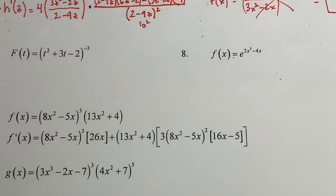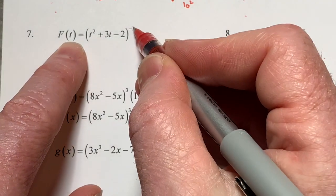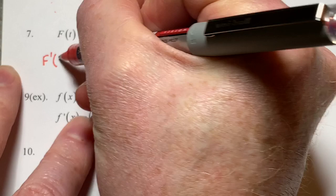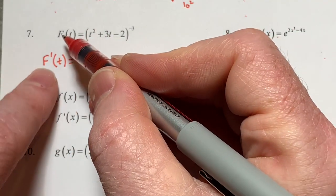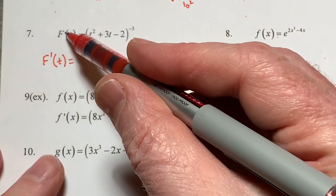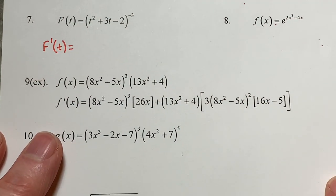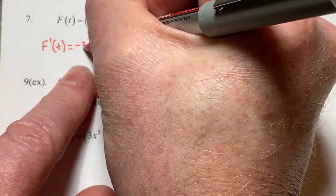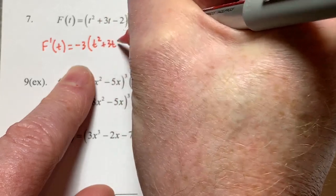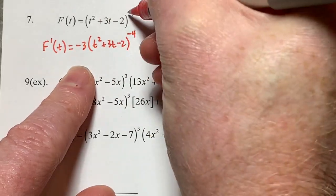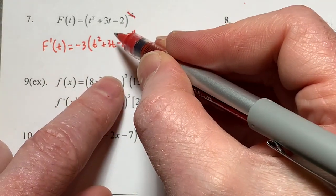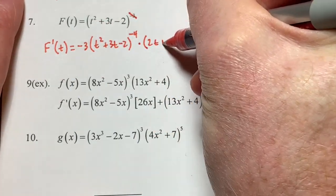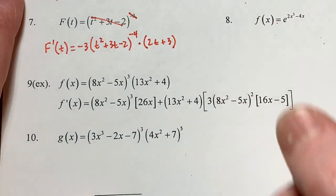Number 7: I've got a power on the outside and a function on the inside, so I start with the outer function. Big F prime of t — there's a big difference between big F and little f, so don't change the letter. Outer power: negative three times one, copy down the blah, subtract one. That takes care of the outer power. Then go to the inner function — that's where the chain comes in — so times the derivative of that: 2t plus three. Done.